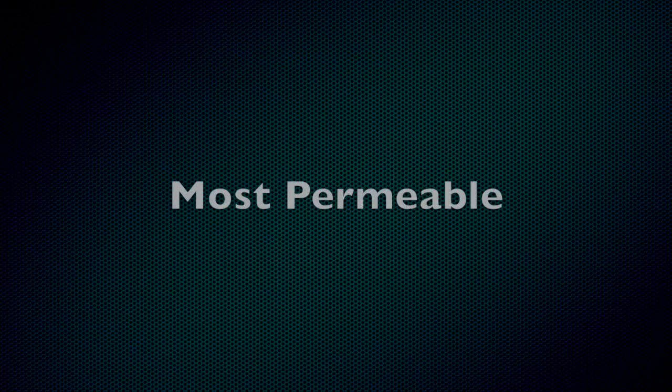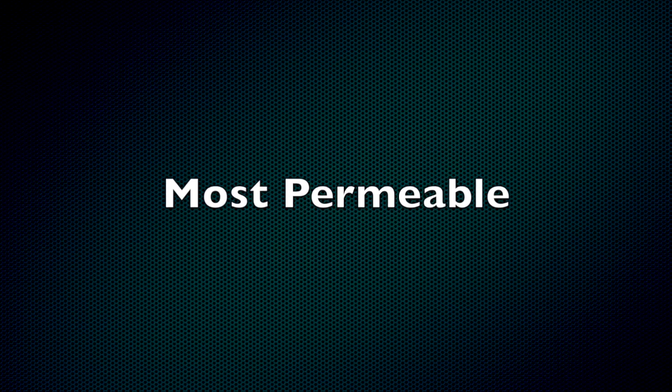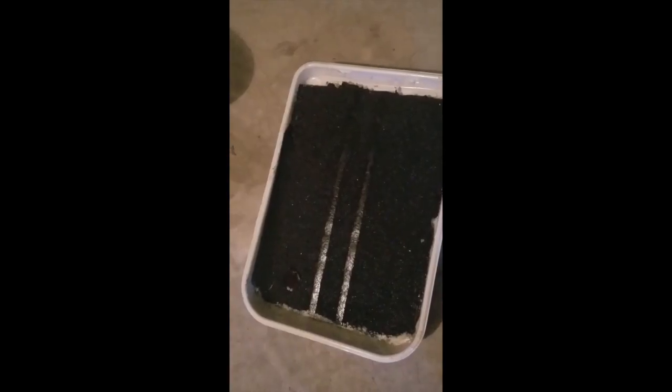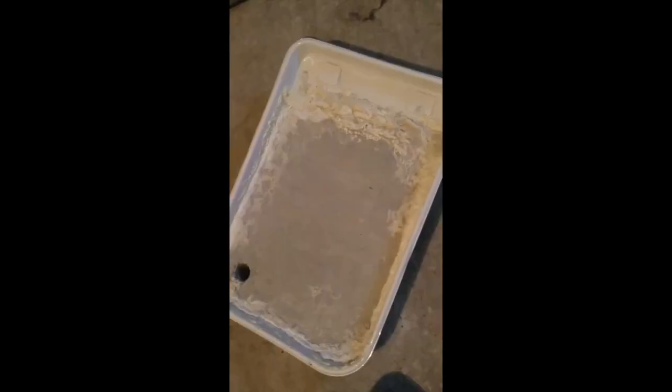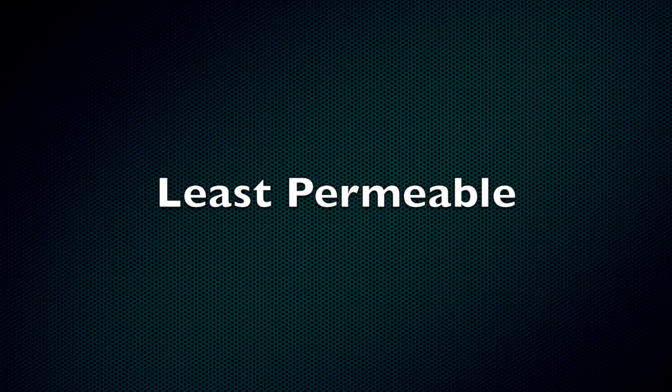After analyzing the data, I concluded that dirt had the least amount of runoff and absorbed the most water because it was the most permeable out of the selection of ground surfaces. Asphalt and concrete had the most runoff and absorbed the least amount of water because they were two of the least permeable ground surfaces. In conclusion, dirt would be a better, more environmentally friendly ground surface to use, which would reduce runoff and erosion.